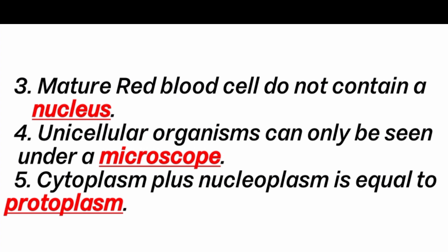Fourth question: unicellular organisms can only be seen under a dash. Answer is microscope. Unicellular organisms, having only one cell, can only be seen under a microscope. Fifth question: cytoplasm plus nucleoplasm is equal to dash. Answer is protoplasm. The entire contents of the cell — cytoplasm and nucleoplasm — together make up the protoplasm.